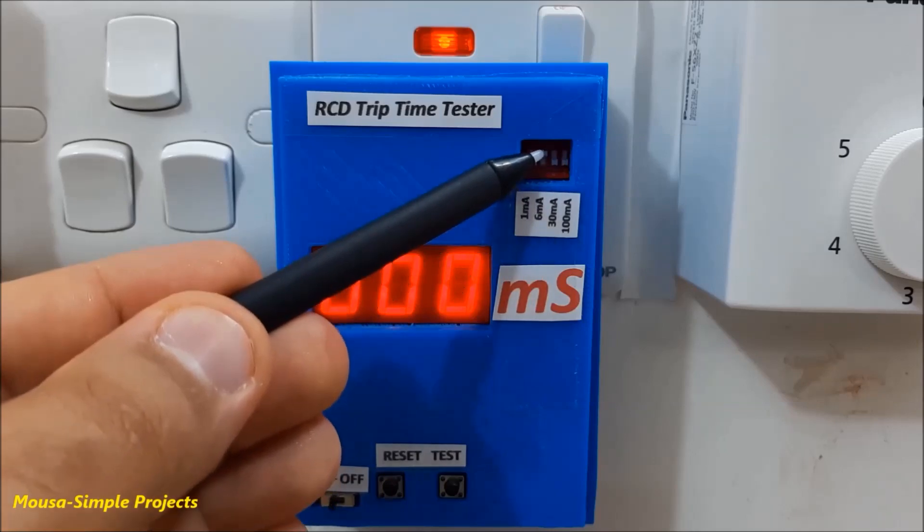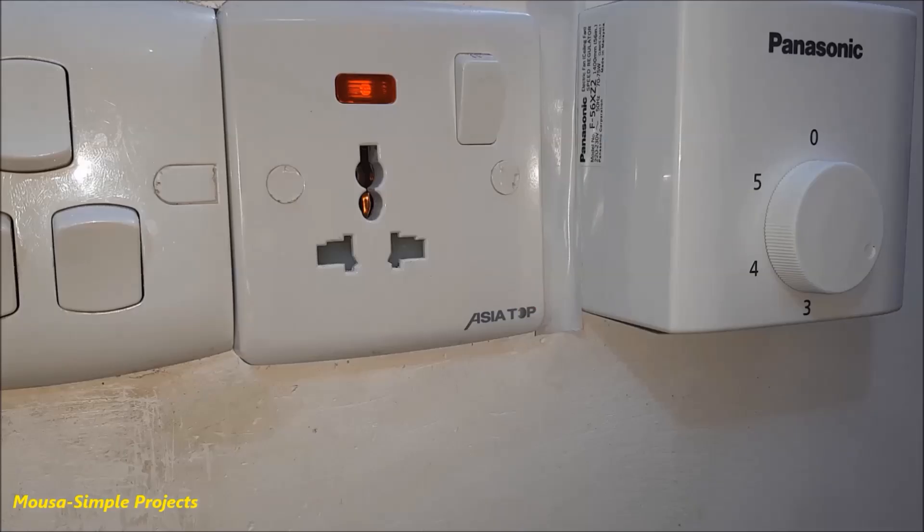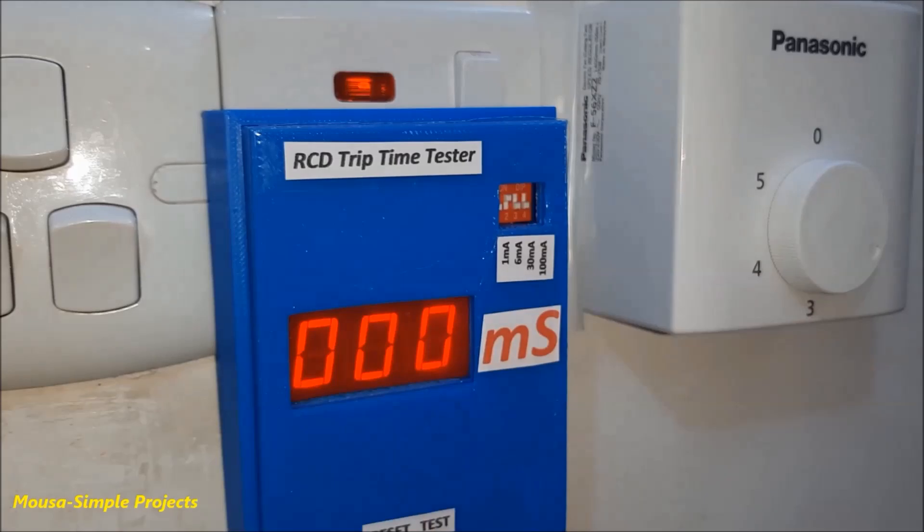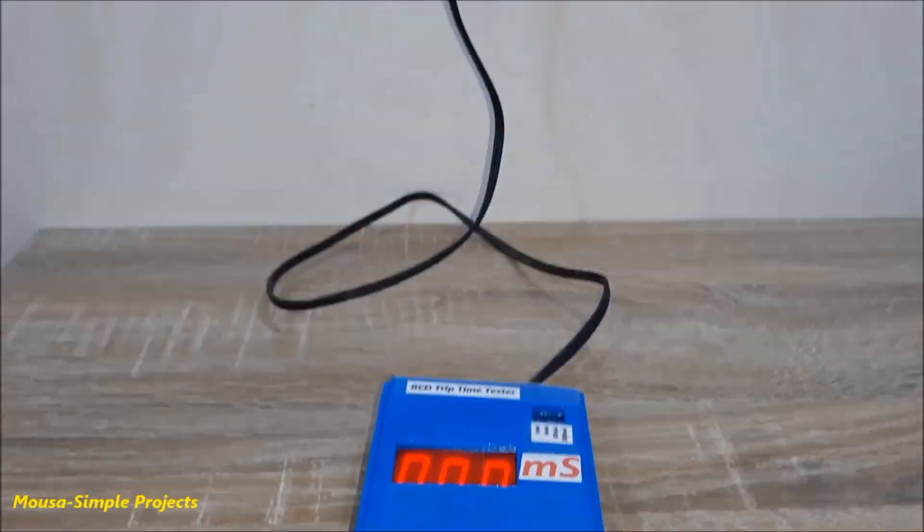With 6 mA of leakage current, the RCD does not trip. Instead of plugging the enclosure to the socket, we can use a cord wire.